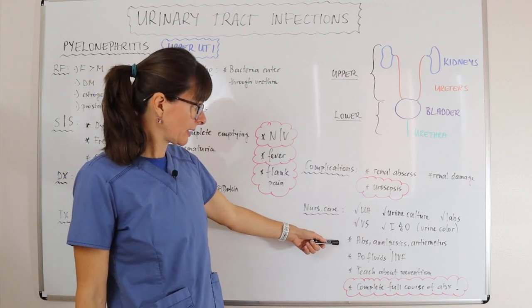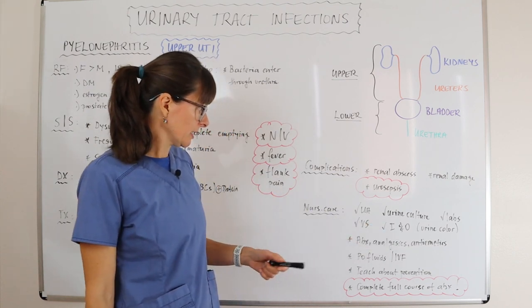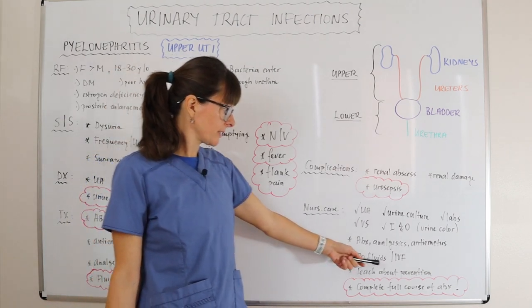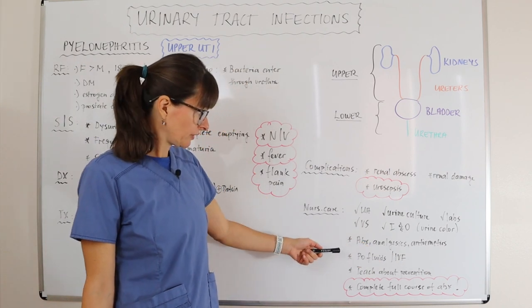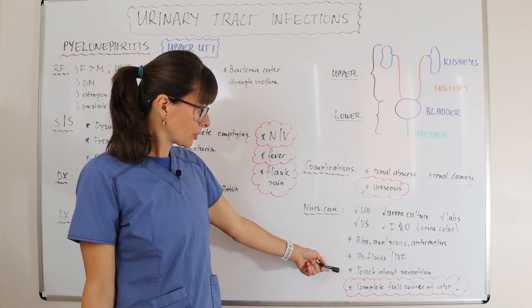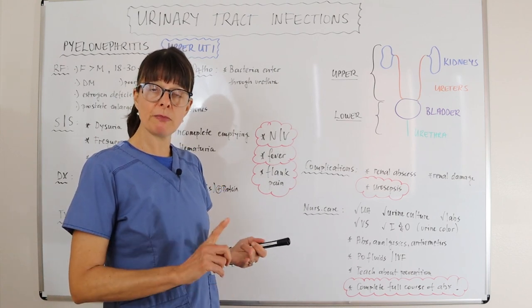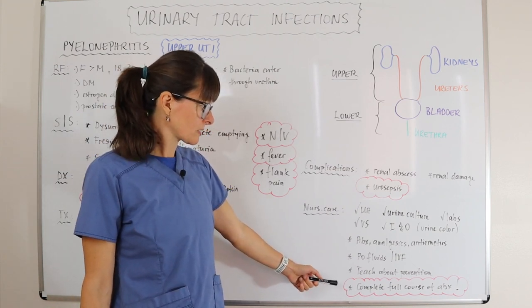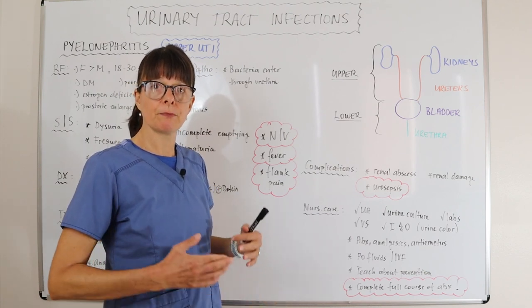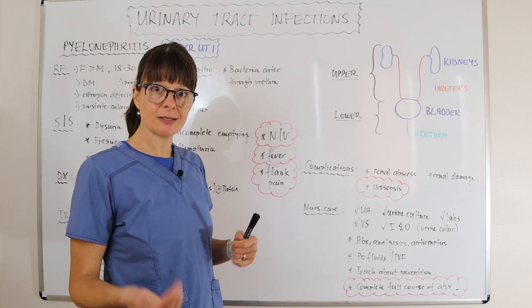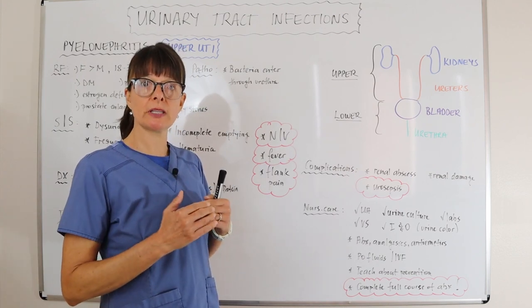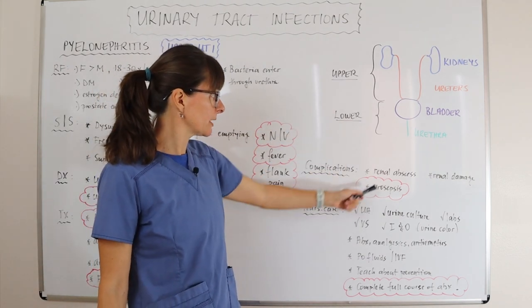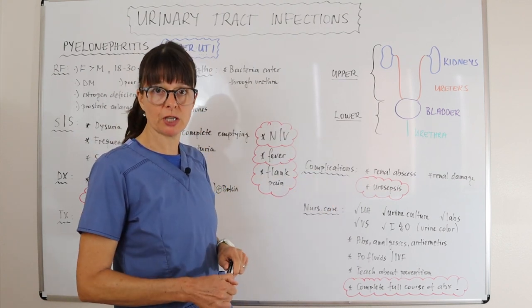We want to administer the antibiotics, analgesics, and anti-emetics. If the patient is admitted, there will certainly be IV medications, and we want to encourage PO fluids as tolerated. We want to teach the patient about prevention, especially for young females and high-risk patients. Always encourage the patient to complete the full course of antibiotics, because otherwise we may contribute to antibiotic resistance, only partially treat the infection, and if bacteria remains in the urinary tract, it can lead to further complications — and now we have resistant bacteria to deal with.